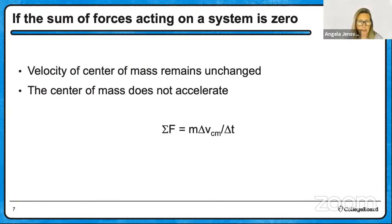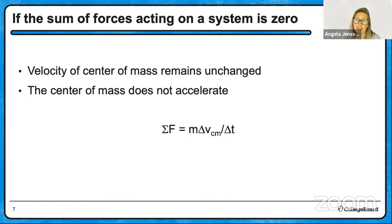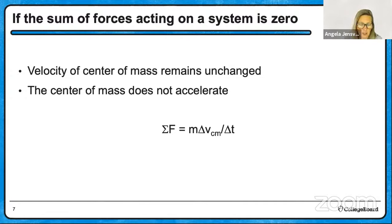Rearranging Newton's second law, and assuming constant mass, the sum of forces equals M times delta V over delta T. If the sum of forces acting on a system is zero, the velocity of the center of mass doesn't change — so the center of mass doesn't accelerate.